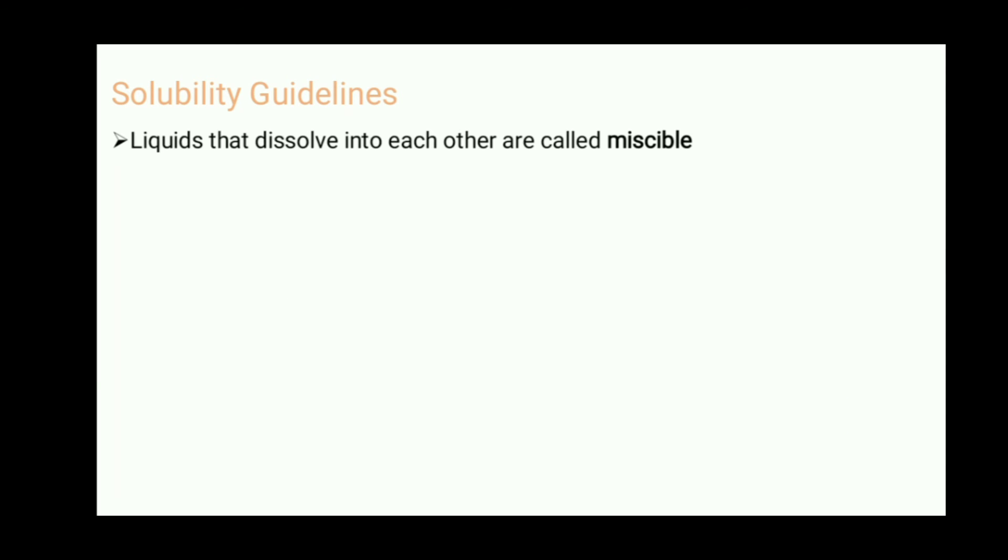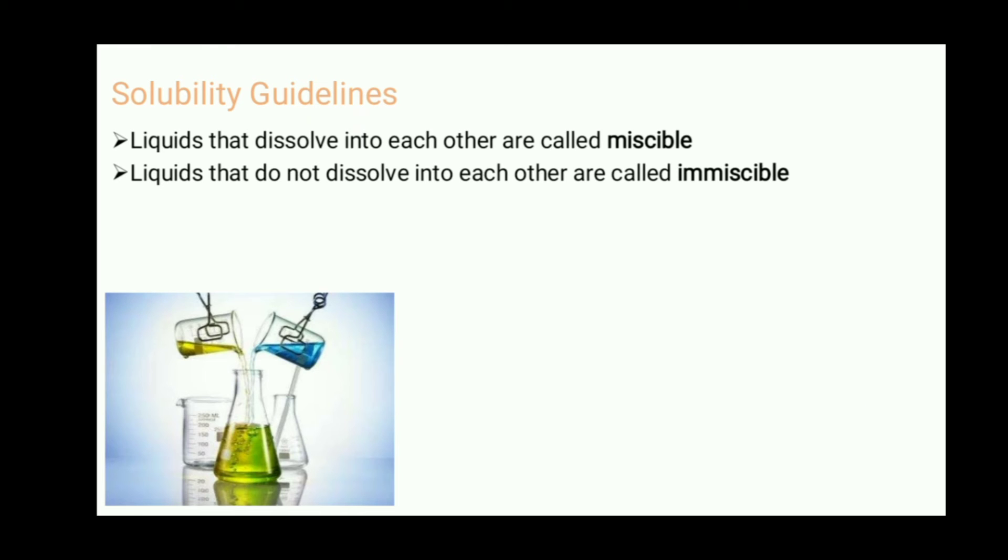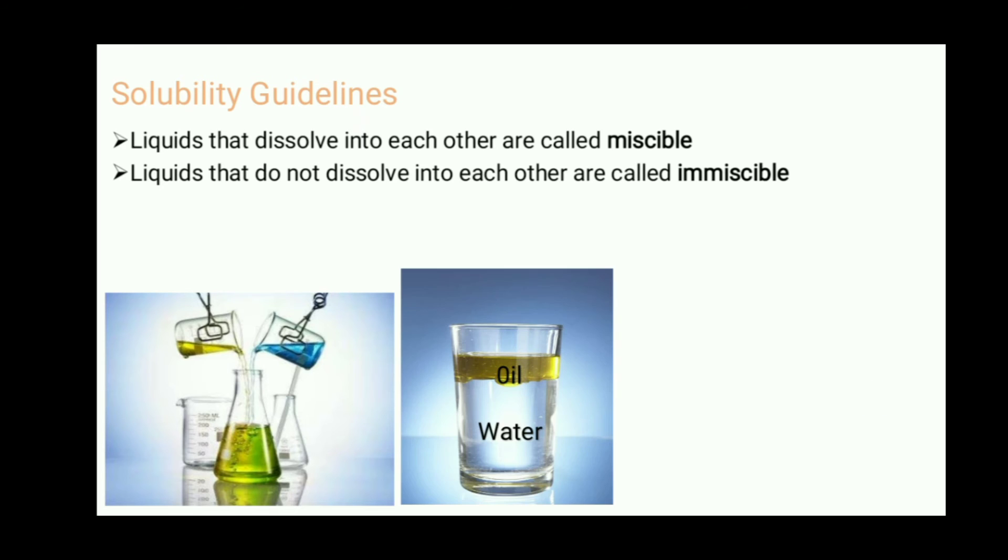Here are some guidelines for solubility. Anytime we have liquids that are going to be dissolving into each other, we would say that they are miscible. Here I have a yellow and a blue liquid that are mixing together. We would say that these liquids are going to be miscible with one another. Anytime you have two liquids that do not dissolve, that would be immiscible. A common example of this would be oil and water. One is hydrophobic and one is hydrophilic, and they don't like to mix with each other.